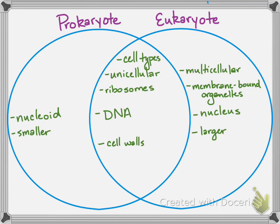Both can have cell walls. In eukaryotes you see them in fungi and in plants. In prokaryotes, you see them in a lot of different bacteria with slightly different chemical compositions, but you're going to see cell walls in both cell types.